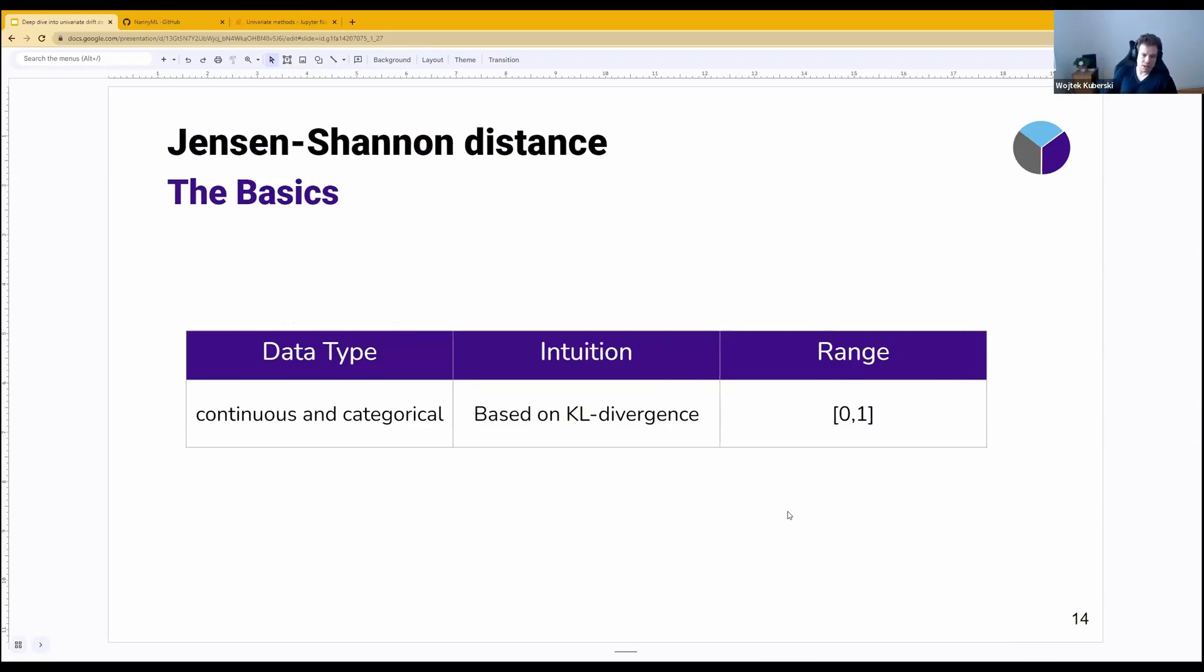First one is the Jensen-Shannon distance. Let's cover the basics. It covers both continuous and categorical features.